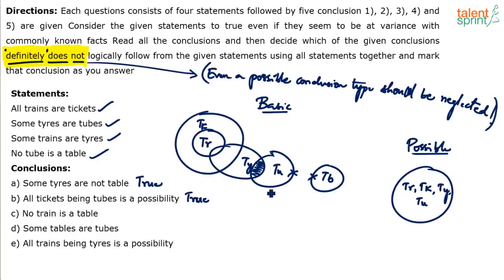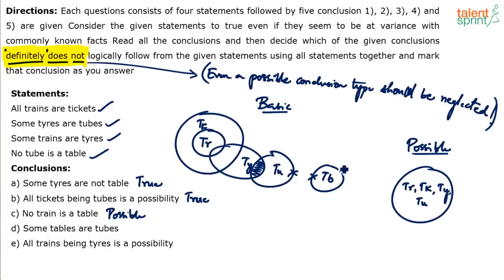Tables should not overlap with tubes, but tables can come and overlap with trains. So a diagram can be drawn where tables overlap with trains, making 'no train is a table' false in that case. However, the question asks which conclusion definitely does not follow. Since 'no train is a table' is possible in the basic diagram — it follows sometimes — we cannot say it definitely does not follow. So it is possible, not always false.